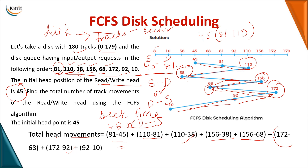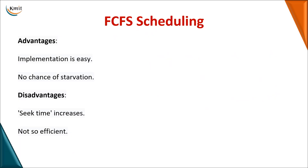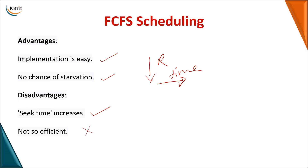In FCFS, no special processing is done — you simply take the first request and perform the operation. Implementation is very easy and there is no chance of starvation, because as soon as a request arrives it is processed. However, the seek time is higher compared to other algorithms, making it less efficient since no priority or optimization is considered.